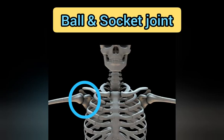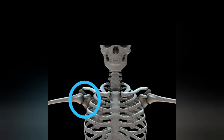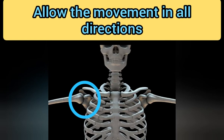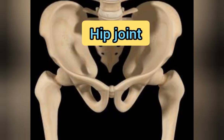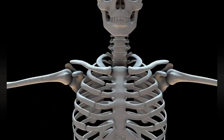Ball and socket joints allow movement in all directions. For example, the hip joint and the shoulder joint are ball and socket joints. With that, our discussion of the types of joints comes to an end.